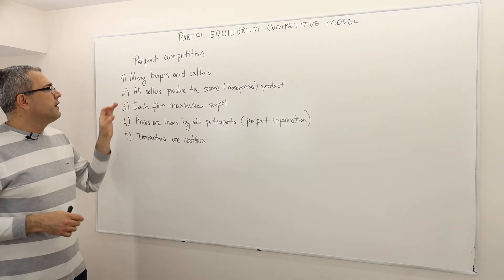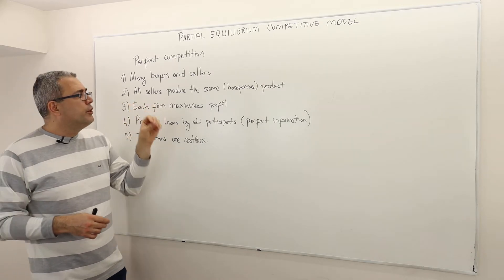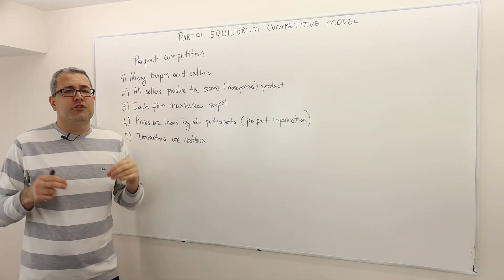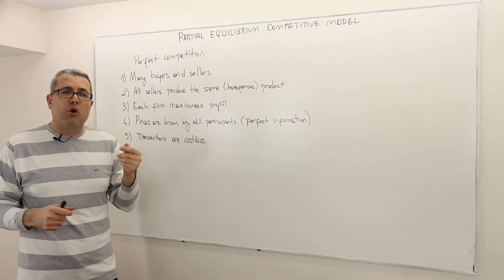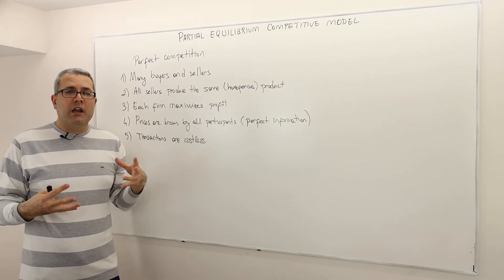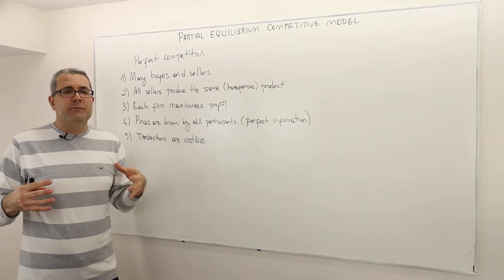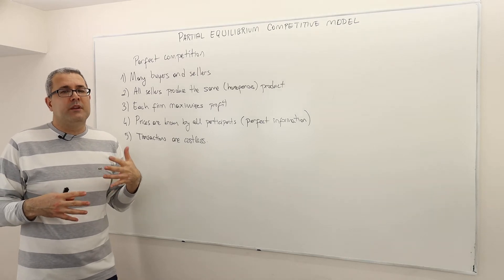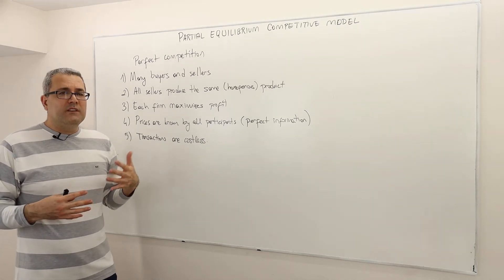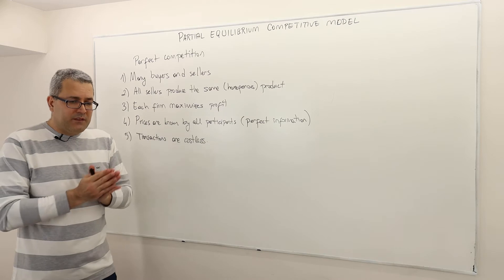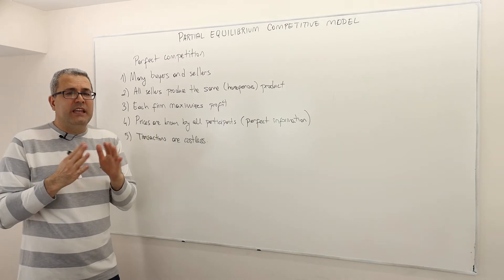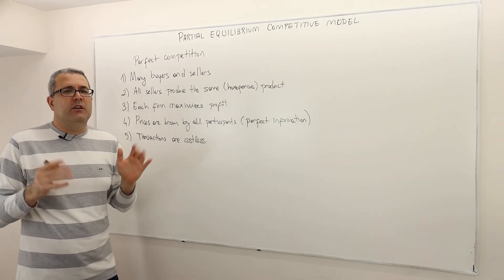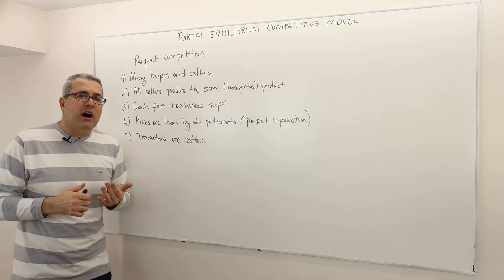The second important thing is that all the sellers produce exactly the same homogenous product. So this is, again, a very strong requirement that is almost impossible to match up in reality. So what does that mean? That means the products are identical in any dimension. This is, again, not really possible.